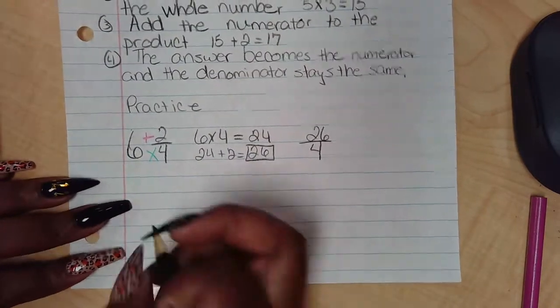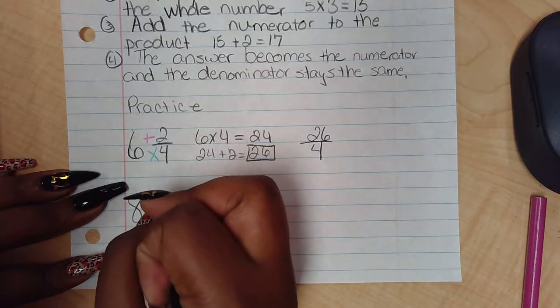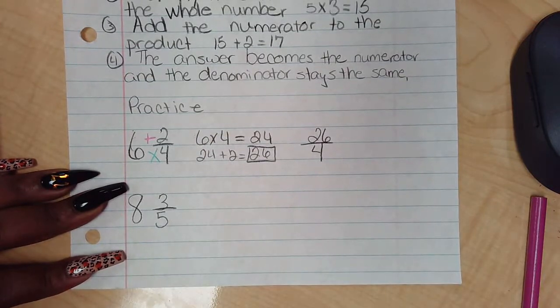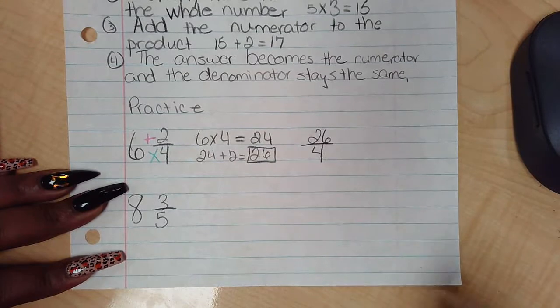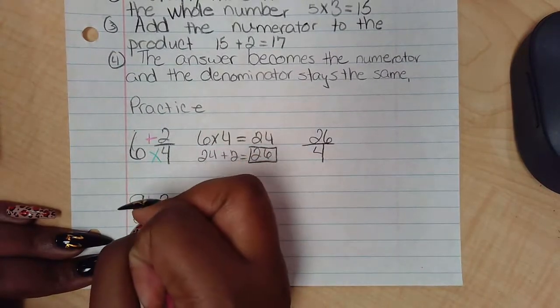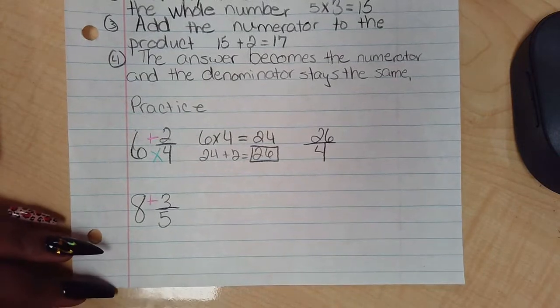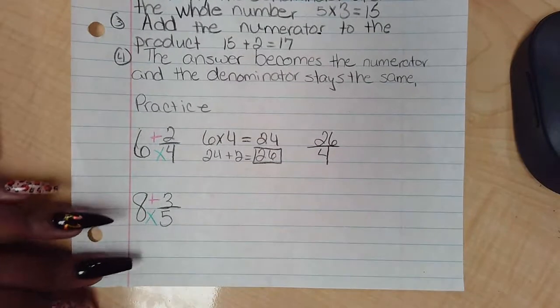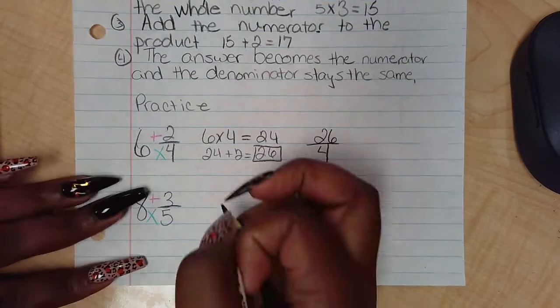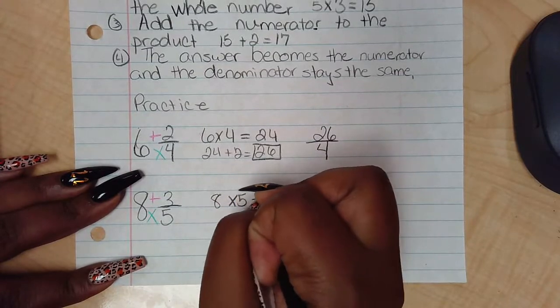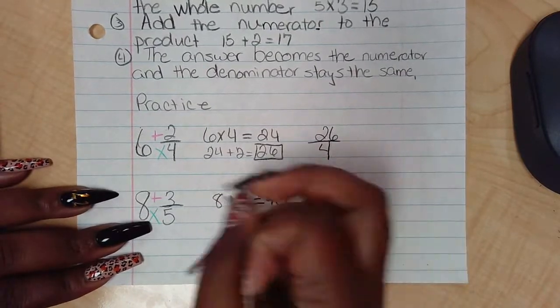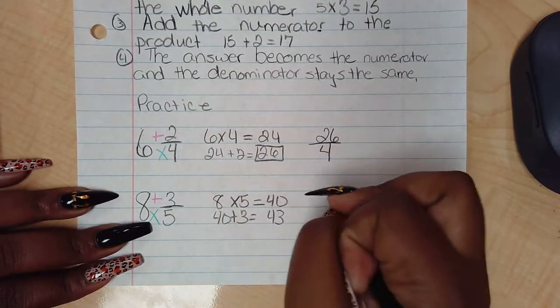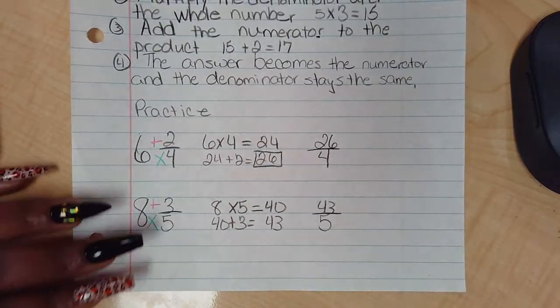We're going to do one more. Let's do 6 and 3/5. I'm gonna put my T and X. So now we're gonna do 6 times 5 equals 30... 8 times 5 equals 40. Then we'll do the product, 40 plus 3 equals 43. So my new answer is 43 over 5.